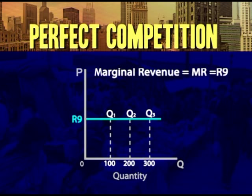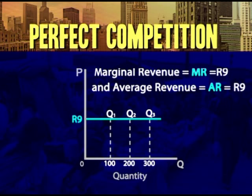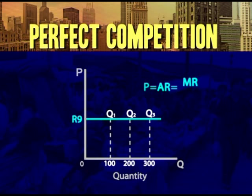In other words, the marginal revenue of the firm is nine rand. Now, what's the firm's average revenue? If the total revenue is 900, divided by the 100 units sold, it equals nine rand. At a total revenue of 1,800 rand, the average revenue is 1,800 divided by 200 units, which also equals nine rand. So it doesn't matter what quantity is sold — the selling price, the average revenue, and the marginal revenue of the firm are all the same.